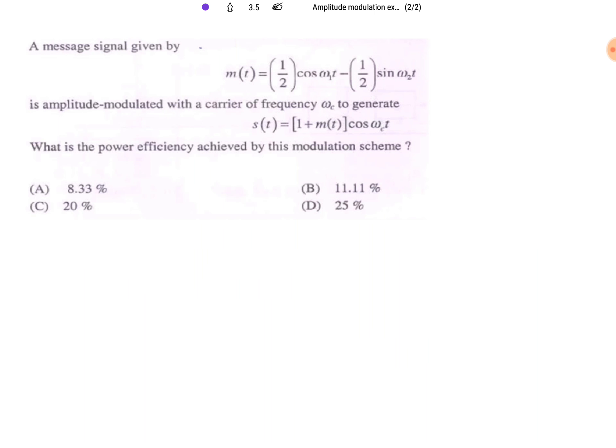In this question, message signal is given by mt equals half cos ω₁t minus half sin ω₂t in amplitude modulated signal with carrier frequency ωc that generates st equals 1 plus mt cos ωct. What is the power efficiency by this modulation?